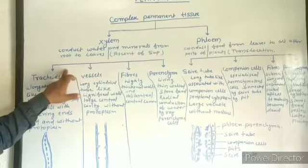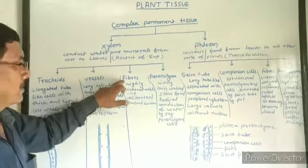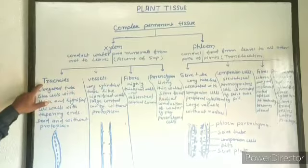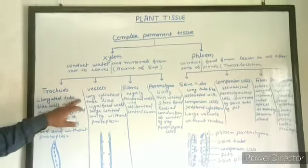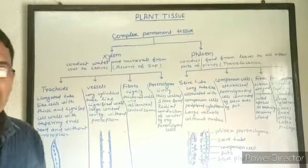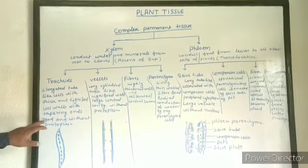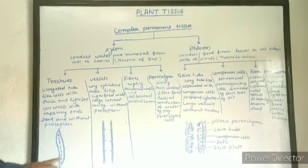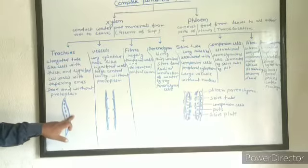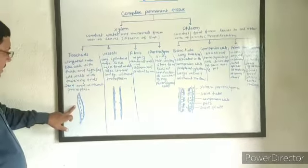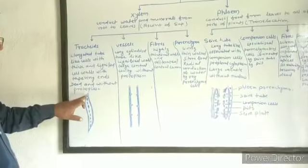Xylem consists of four elements: tracheids, vessels, fibers, and parenchyma. Tracheids are elongated tube-like cells made up of thick and lignified cell walls with tapering ends. They are dead cells and without protoplasm. They have tapering ends, thick cell walls, with cellulose and lignin deposited — that is, lignified cell walls. They are dead and without protoplasm, and they have several pits.